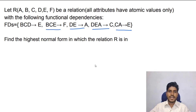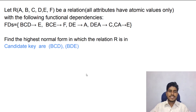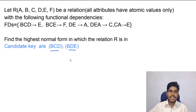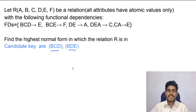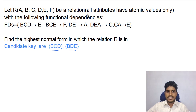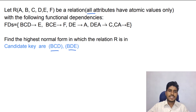First we have to find the candidate key. In this relation, the candidate keys are B, C, D and B, D, E. In this question it is mentioned that all attributes have atomic values, so this relation is in first normal form.